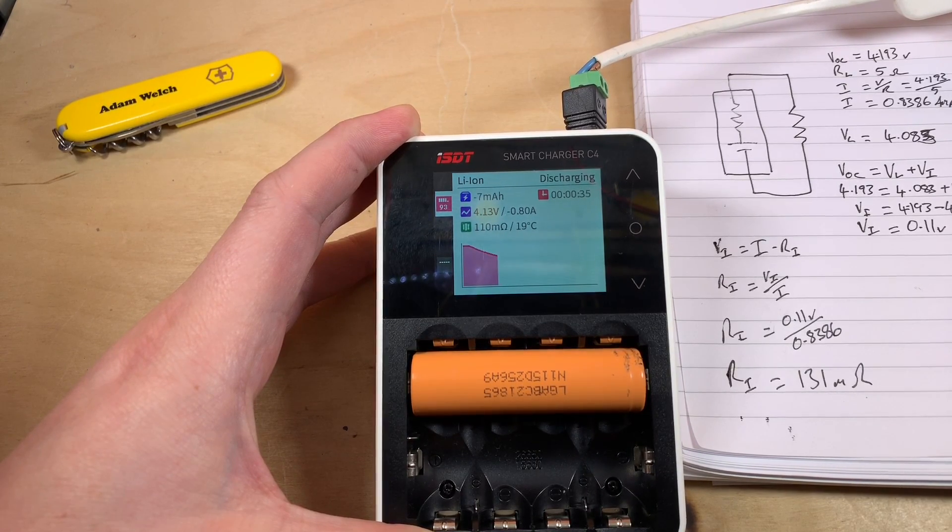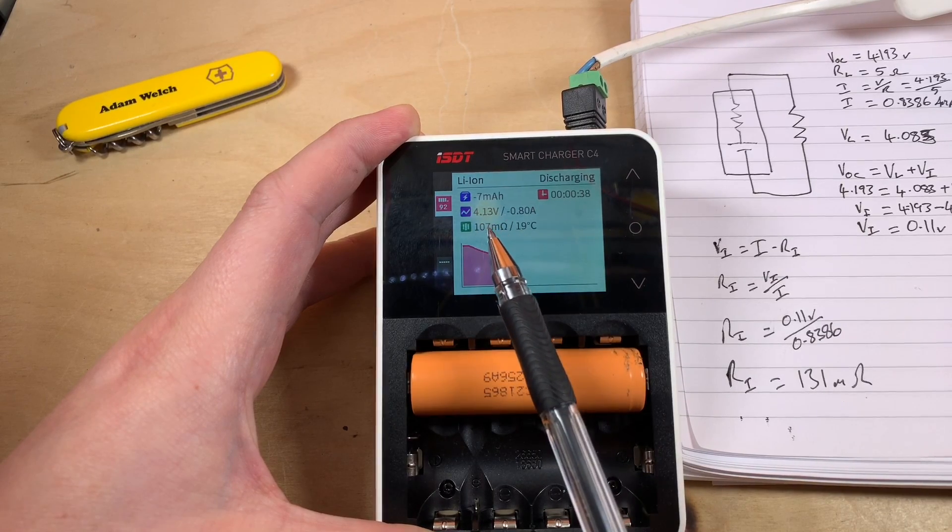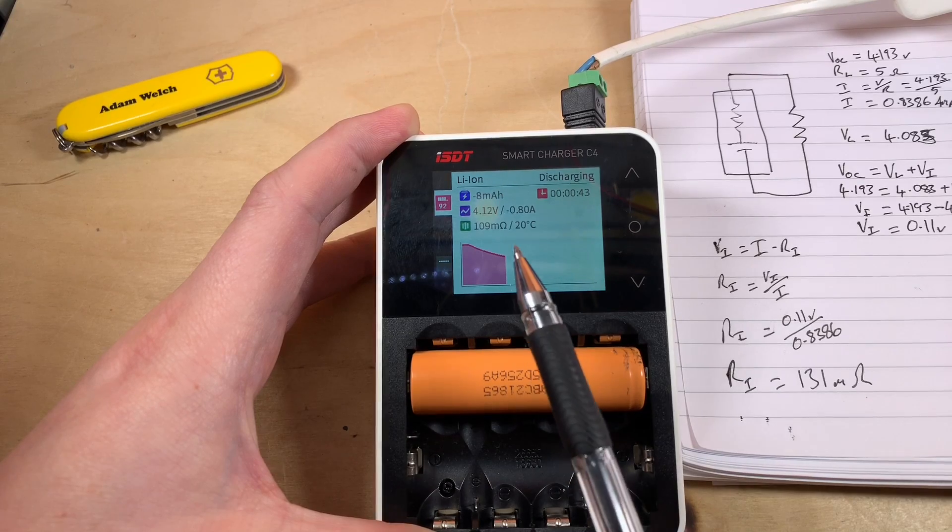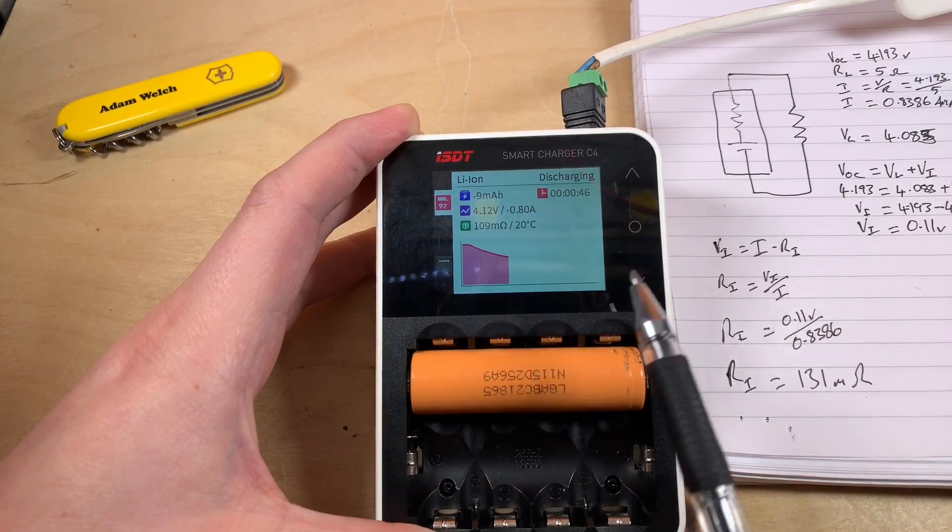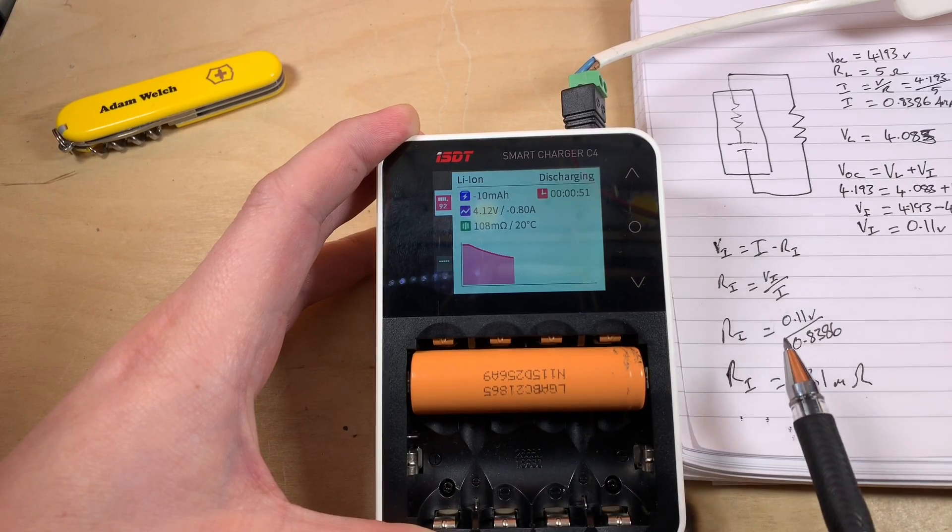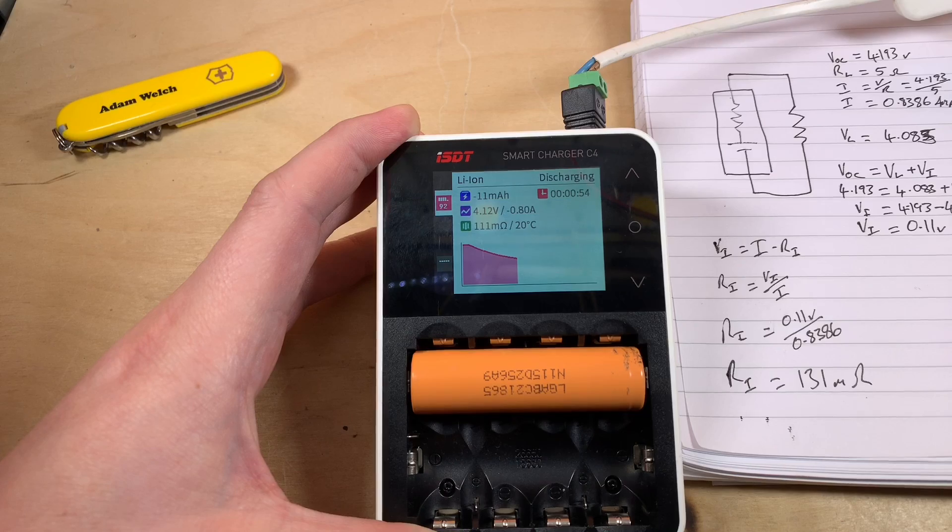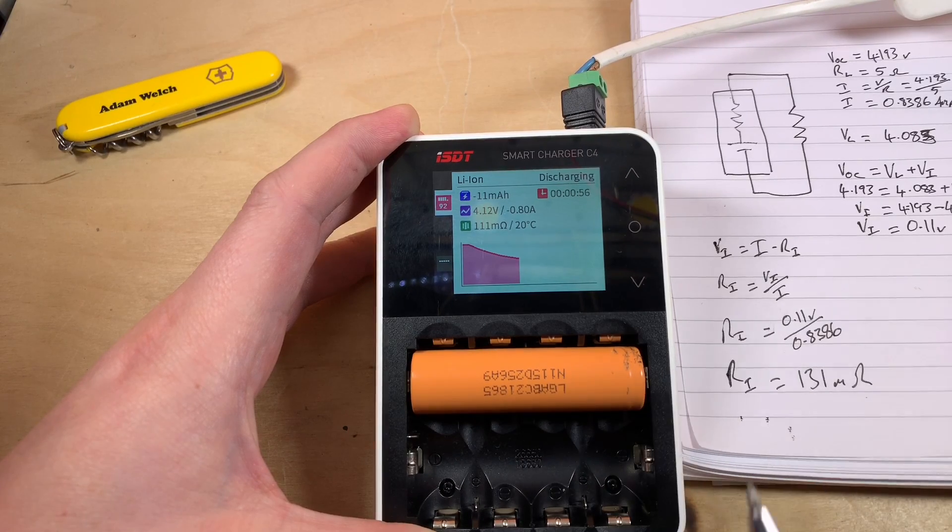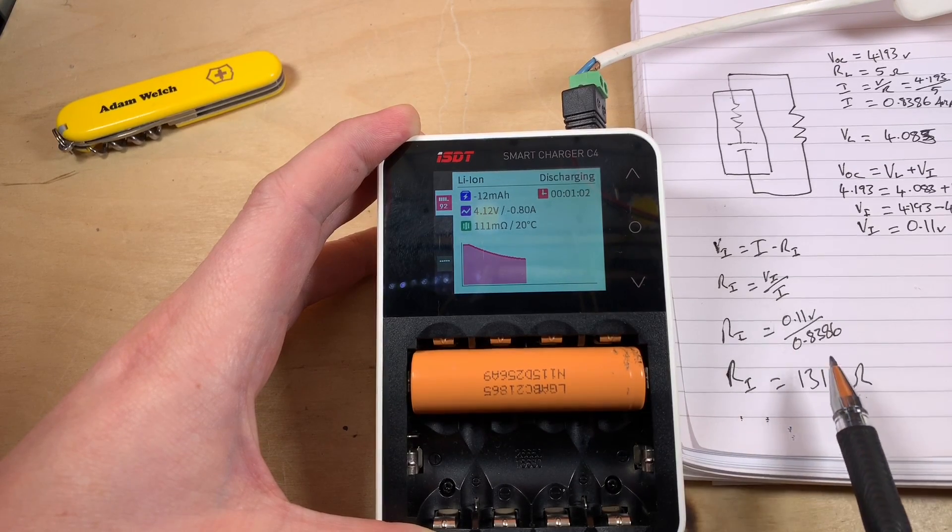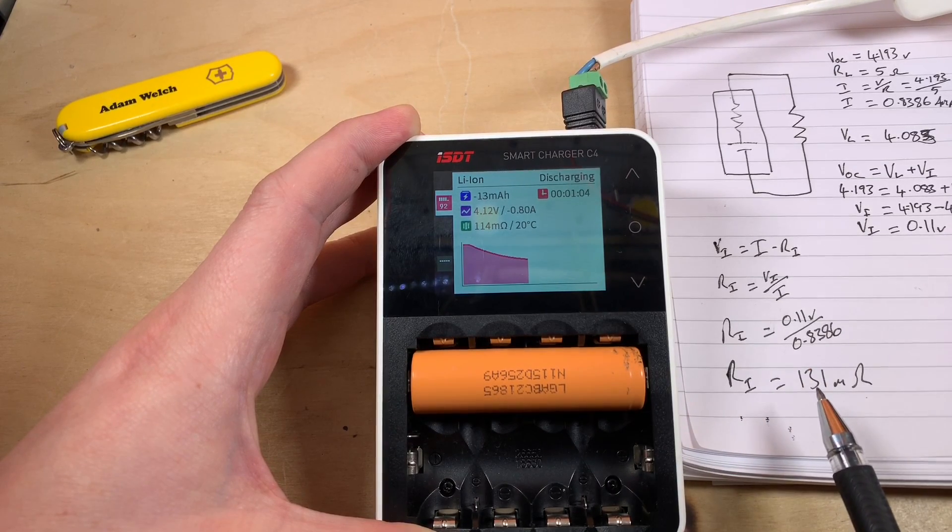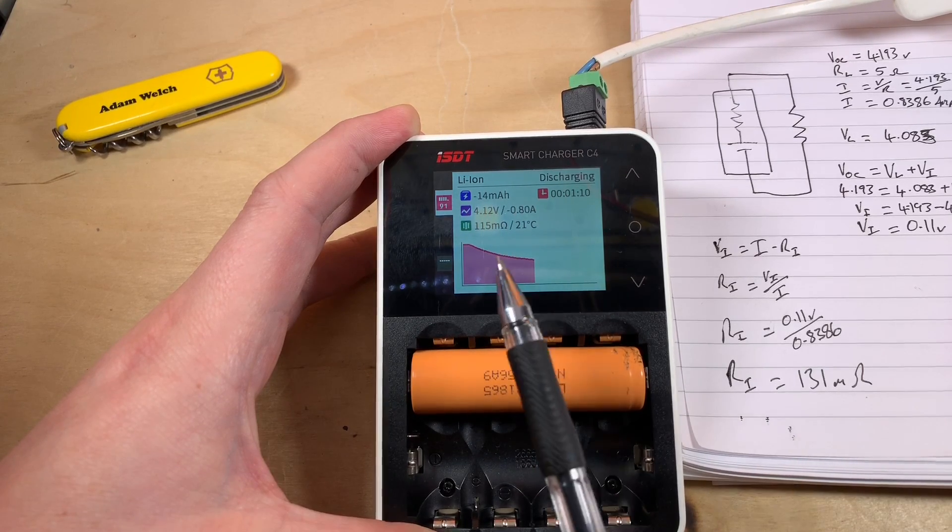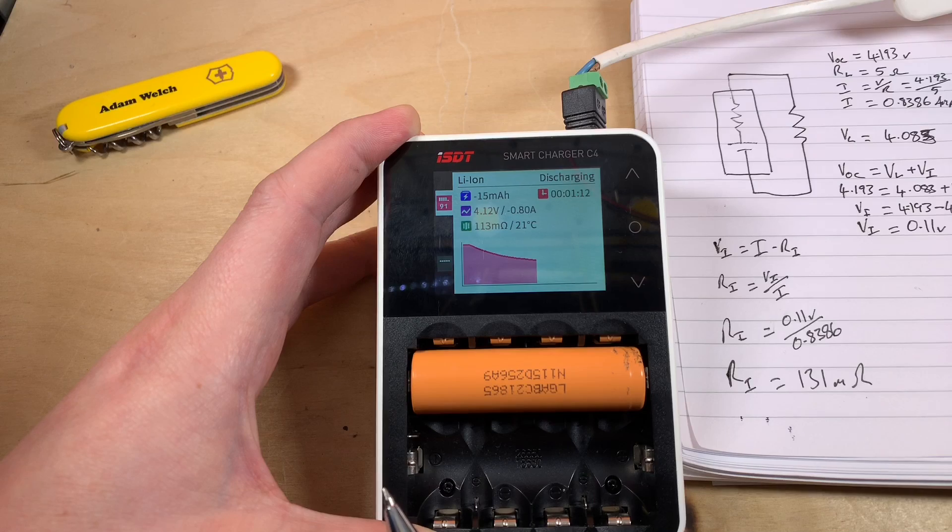And of course, that's an important point that the internal resistance will change at different temperatures, different state of charges, so different voltages. That can change quite dramatically. So if you are trying to get an idea of the internal resistance of all your cells, you need to do it at the same temperature, the same state of charge, that sort of thing. But actually I'm pretty pleased with that. One calculation, 131 milliohms, and this is about 115 milliohms the IST-D is calculating.